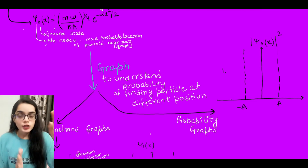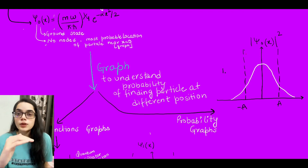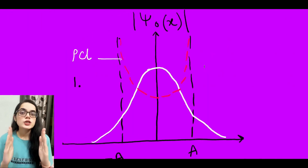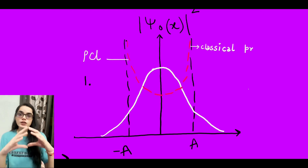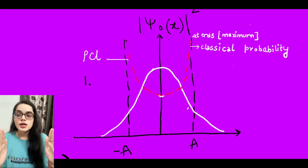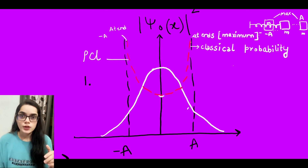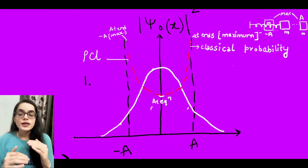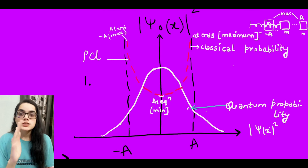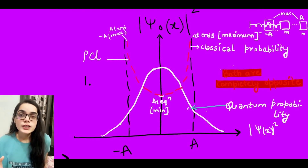I have shown you the classical probability graph alongside the quantum one in the same graph. In the classical system, when the mass goes from −A to +A, the potential energy is very high at the end points, so the mass is most likely seen near ±A — the probability goes toward infinity there and is least at the equilibrium position. But quantum probability is exactly the opposite: it is maximum at the equilibrium position (x = 0) and decreases on both sides. The quantum probability also extends beyond the classical boundaries ±A.